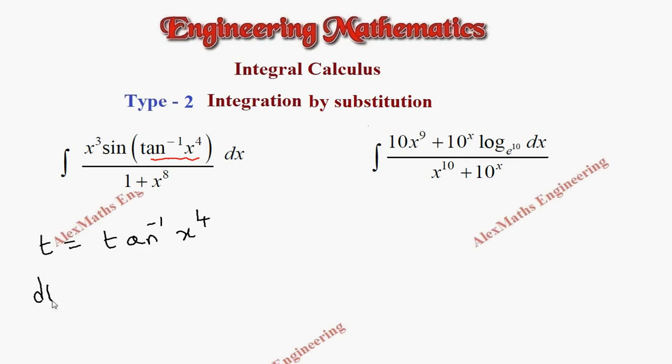And we have to find its differentiation dt equal to. The outer function is tan inverse. Its differentiation is 1 by 1 plus x square. But in place of x, we have x power 4. So we have to write x power 4 whole square.